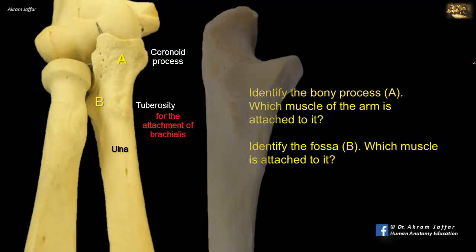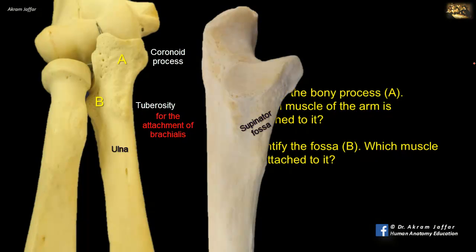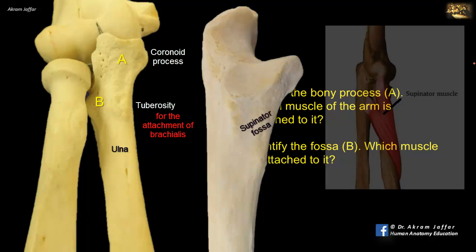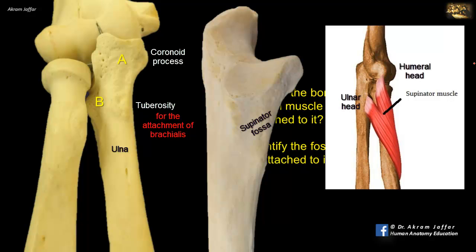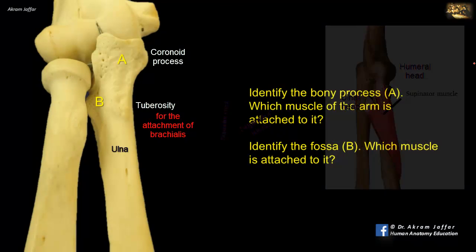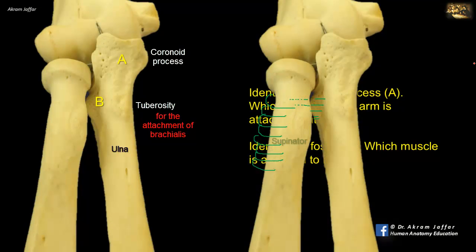B is the supinator fossa, and it is for the attachment of the ulnar head of supinator muscle — the deep head of supinator. The supinator arises by two heads: a humeral head and an ulnar head. The humeral head is superficial and arises from the lateral epicondyle of the humerus, while the ulnar head arises from the supinator fossa and the supinator crest of the ulna behind it. The supinator wraps around the back of the radius to be inserted into the proximal third of the shaft of the radius, and thus the muscle can rotate the radius in supination.